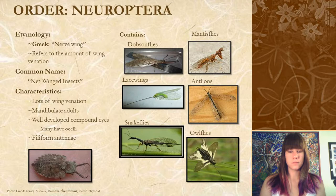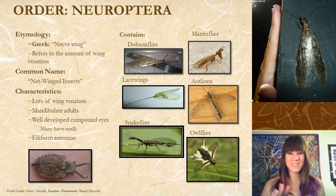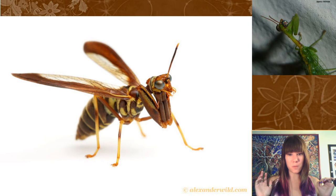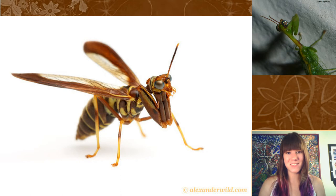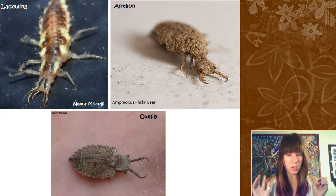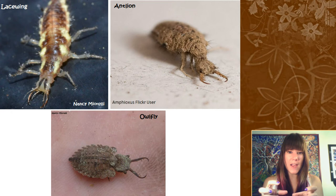Neuroptera includes dobsonflies, which in some places get as big as my hand, lacewings, snakeflies, antlions, owlflies, and this is where the mantis fly belongs — that crazy picture I showed you about why taxonomy is important. The mantis fly that looks half like a mantis, kind of like a fly, and kind of like a wasp belongs in this group. These guys all have a really cool larval stage where they have sickle-like mouthparts. These mouthparts look like they'd be great at chomping, but they're actually like straws — they grab prey and suck up the fluids from inside. All of these larvae are predacious and feed this way.